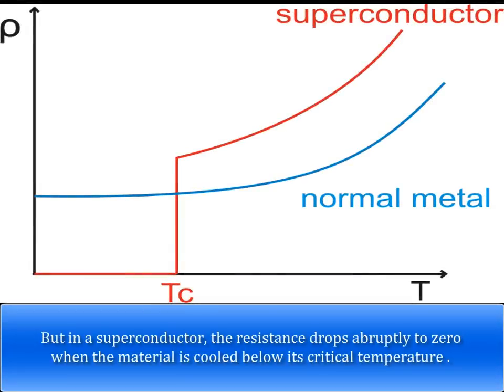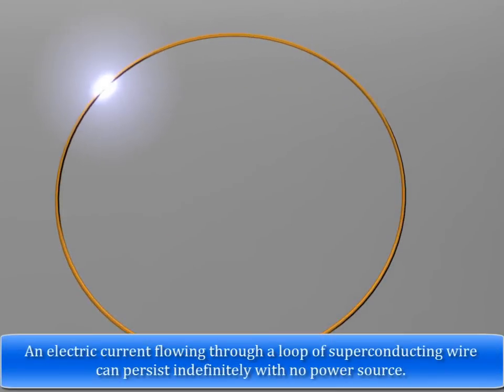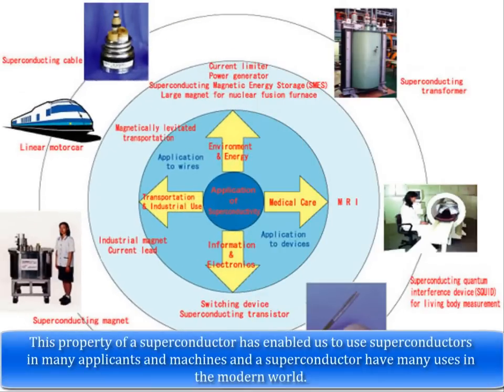But in a superconductor, the resistance drops abruptly to zero when the material is cooled below its critical temperature. An electric current flowing through a loop of superconducting wire can persist indefinitely with no power source. This property has enabled us to use superconductors in many applications and machines. Some of the major applications of superconductors are: Electromagnets and Magnetic Levitation.